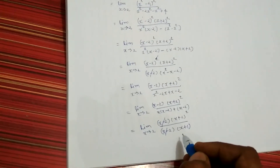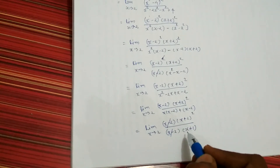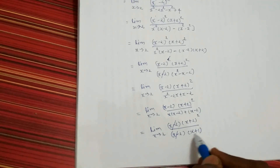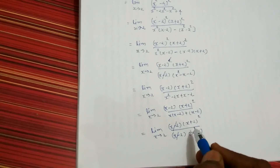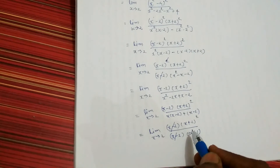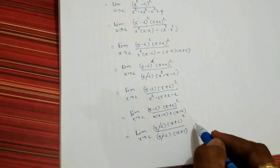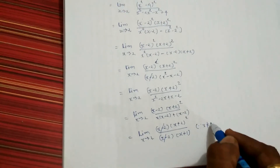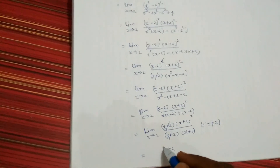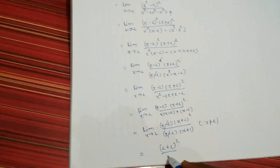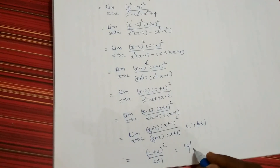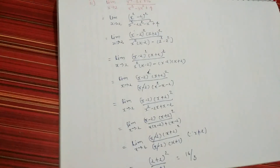Now if you will see here, if you will put the limit directly, it will be 2 plus 2 whole square, that is 4 squared, that is 16, upon 2 plus 1 that is 3. So no 0 by 0 term is there, and you can put the limit directly. So whenever you are putting the limit, you need to write x is not equal to 2. So the answer is 2 plus 2 whole square upon 2 plus 1, that is 16 by 3. Like this way you can get the answer for this. Thank you.